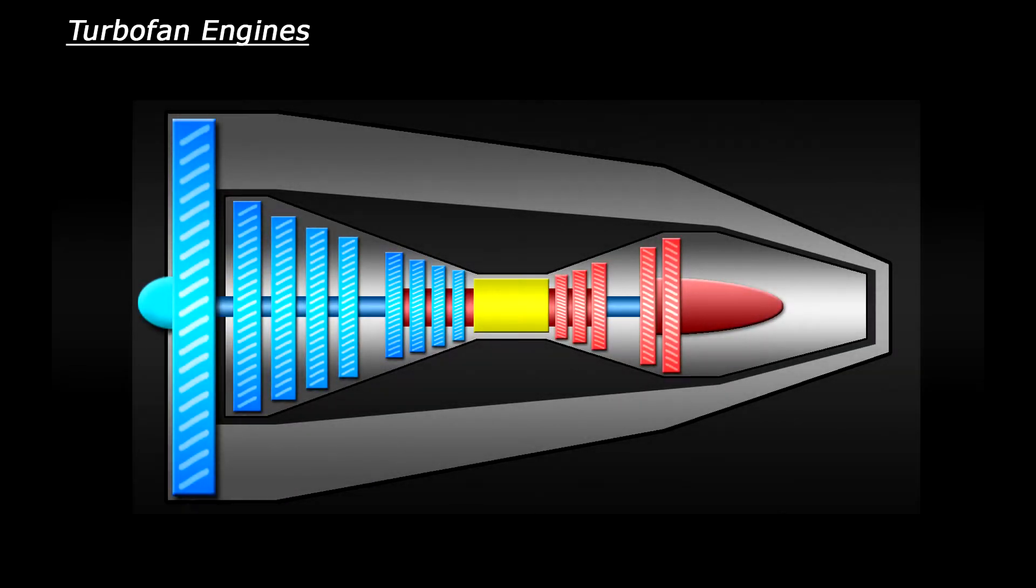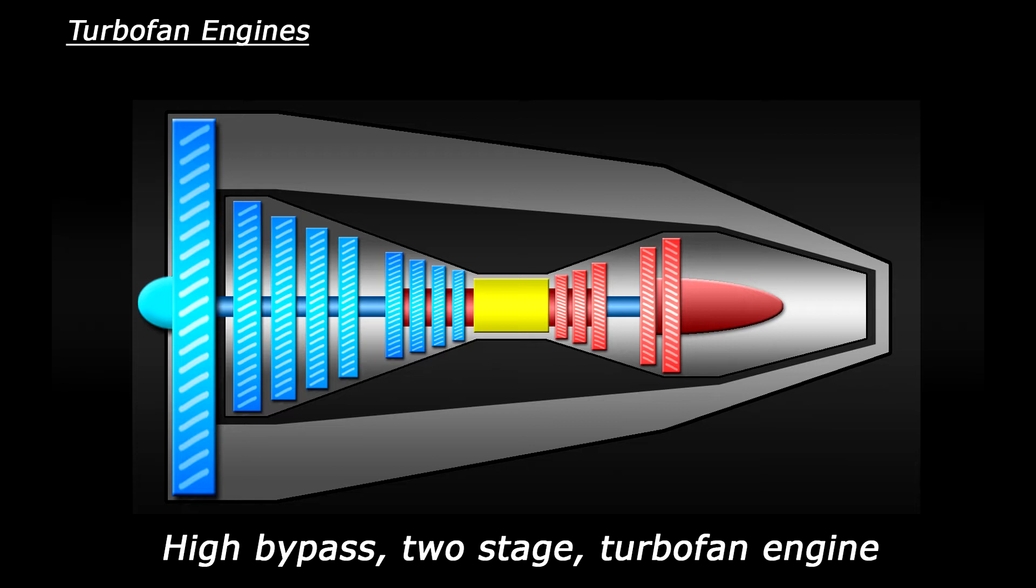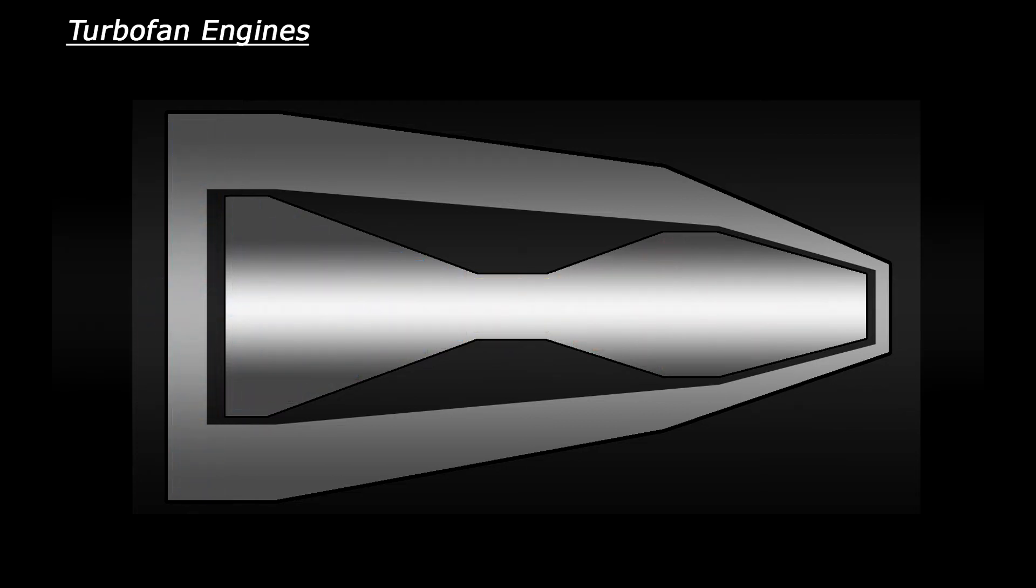So this is a typical jet engine that you'll find on a commercial aircraft. This is a high bypass two-stage turbofan engine. These engines have the same basic layout as before but with a few different features to make them more powerful and more efficient.